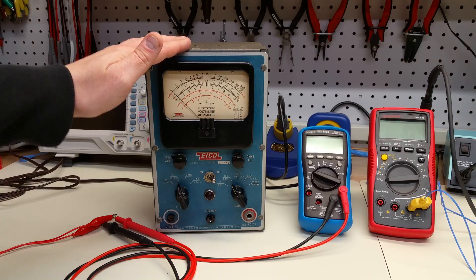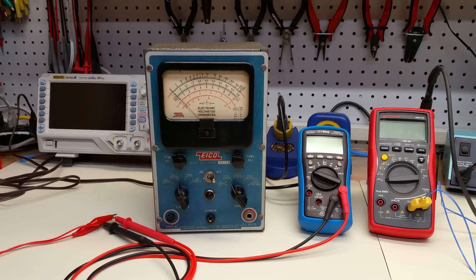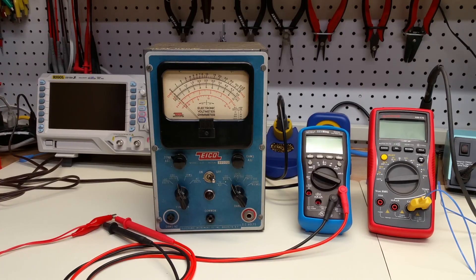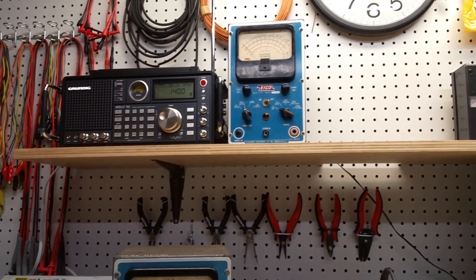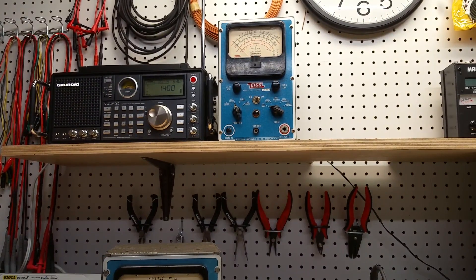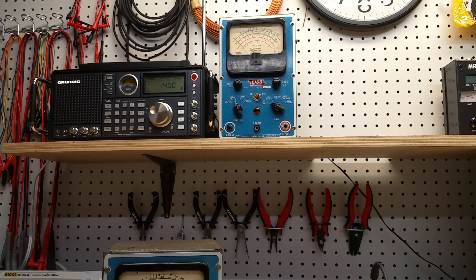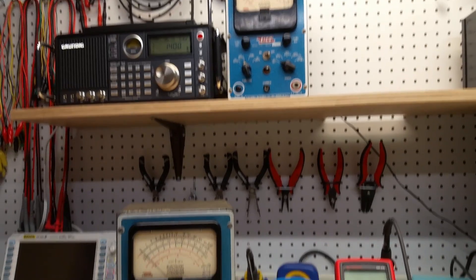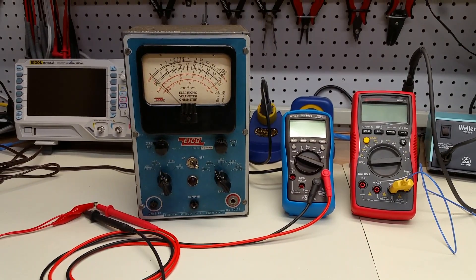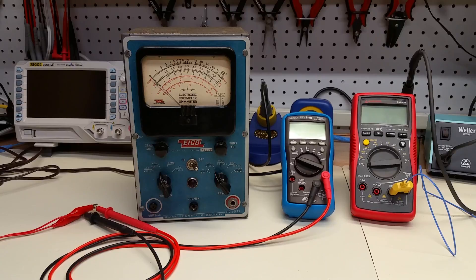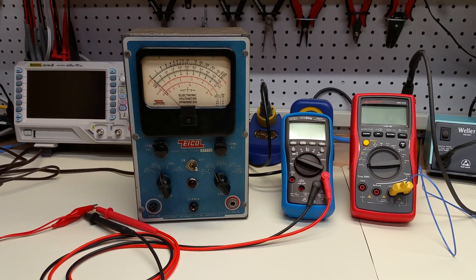So this is the original ICO 221 vacuum tube voltmeter that I had purchased with an eye to restore, and there was a series of videos that we had done that showed the restoration of the VTBM. This is the one that actually got restored initially and I had kind of eaten some components out of this to get the other meter in good shape.